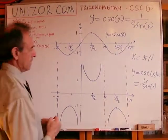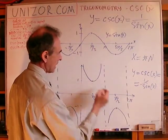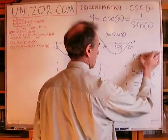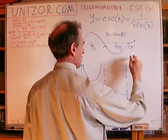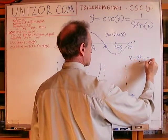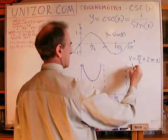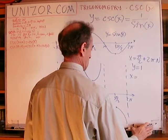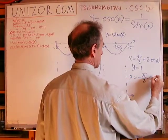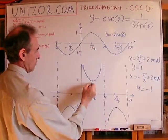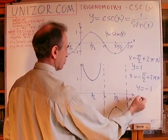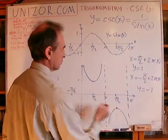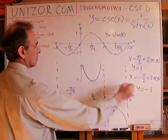What else is important? In the middle of each interval, it has either 1 or minus 1. If x = π/2 + 2πn, y = 1. If x = -π/2 + 2πn, it will be minus 1. These are local maximums and local minimums of the function.